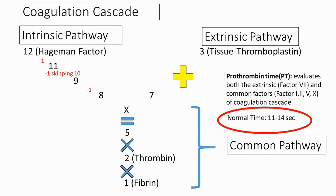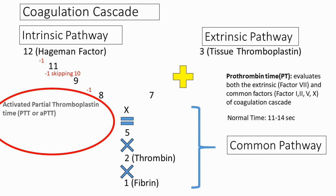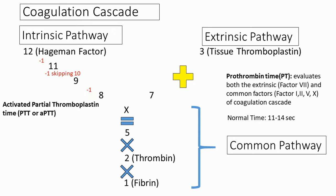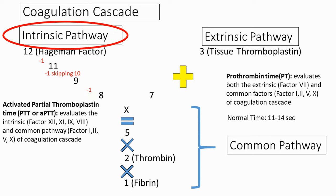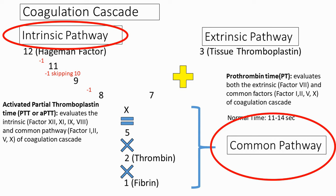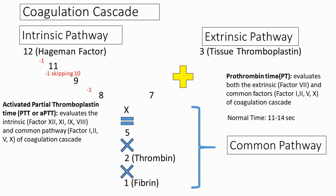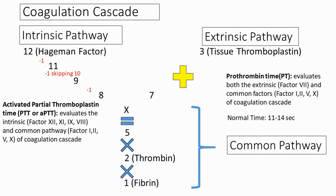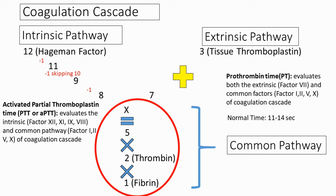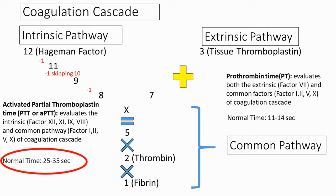Normal prothrombin time is between 11 to 14 seconds. Activated partial thromboplastin time (aPTT) evaluates factors involved in the intrinsic pathway and the common pathway. Factors tested in the intrinsic pathway are factors 12, 11, 9, and 8. Factors tested in the common pathway are factors 1, 2, 5, and 10. Normal partial thromboplastin time is between 25 to 35 seconds.